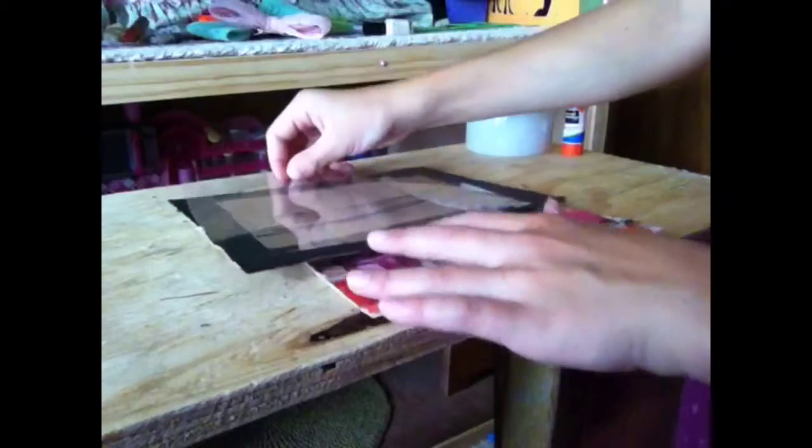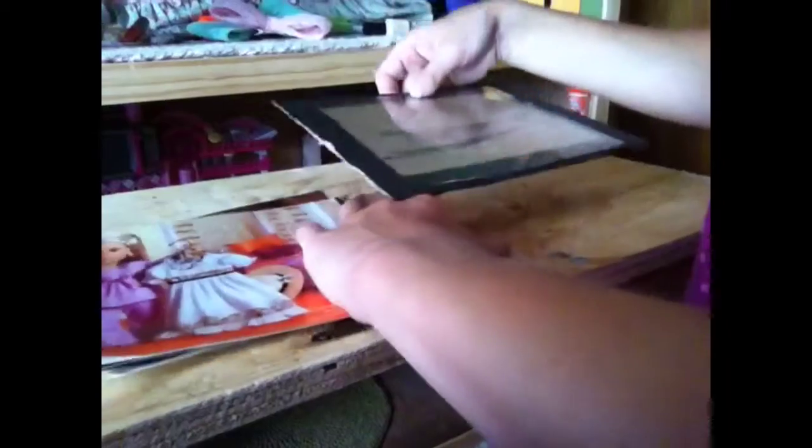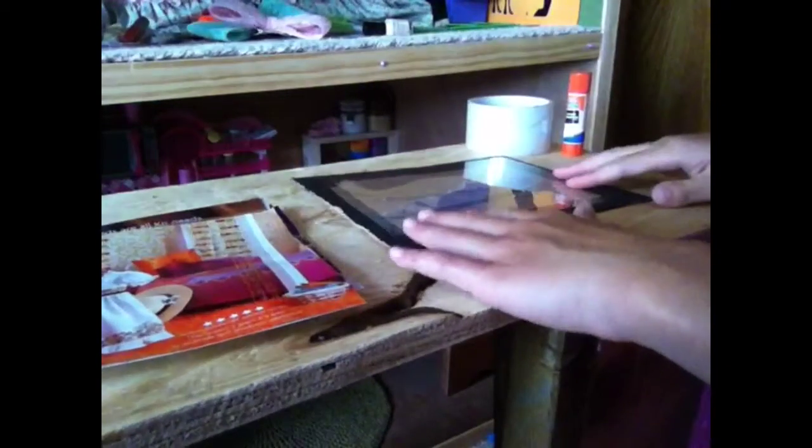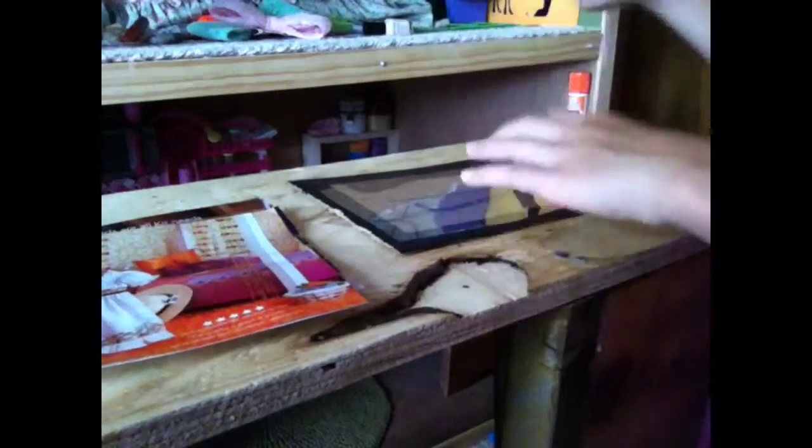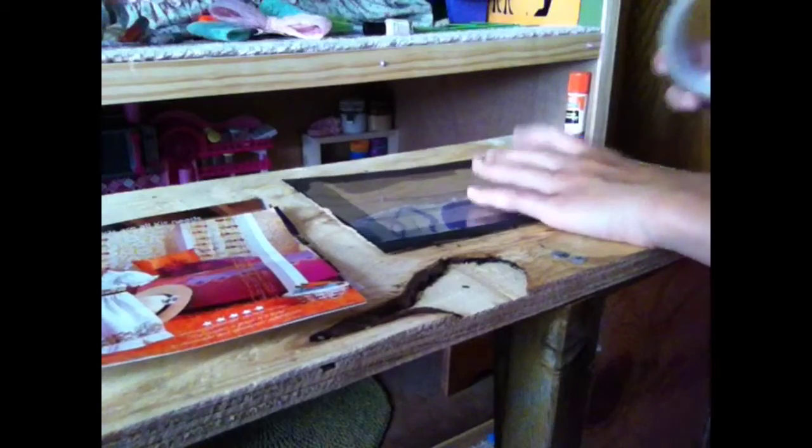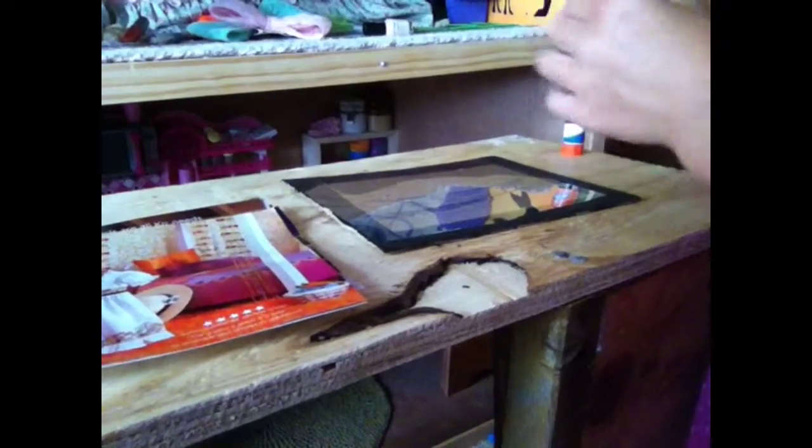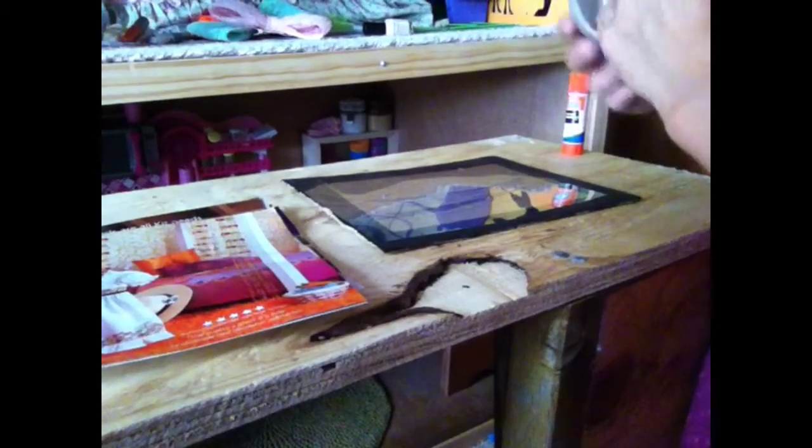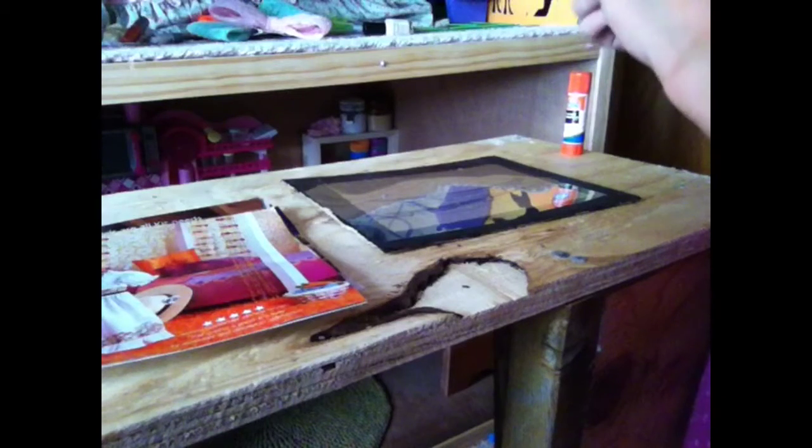you're going to take the cardboard and the plastic, and you are going to tape or hot glue the plastic to the cardboard, but don't tape the top. You're going to tape all of the sides but the top.